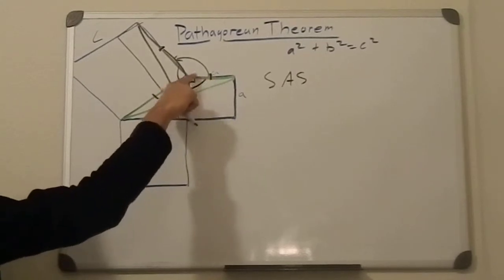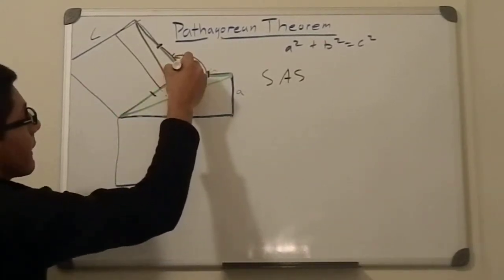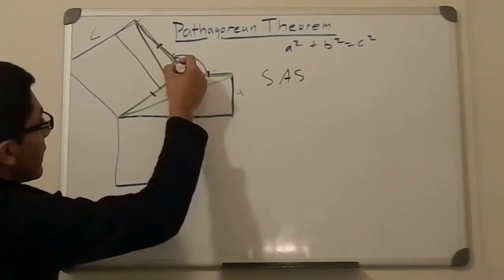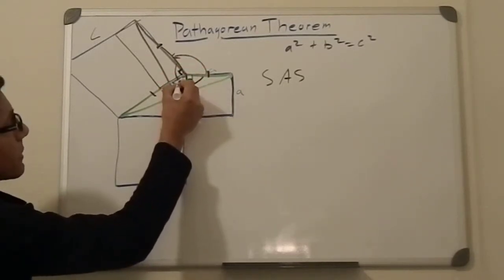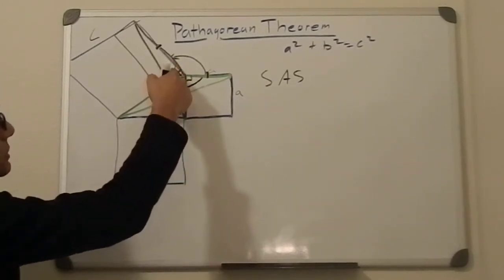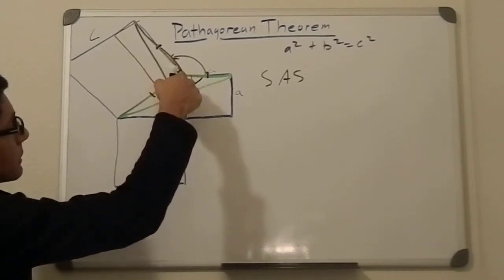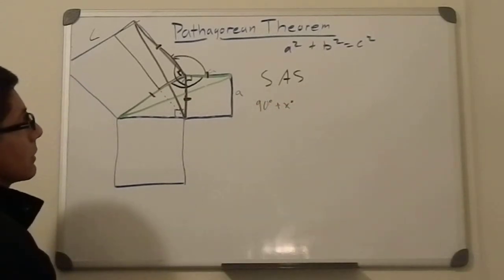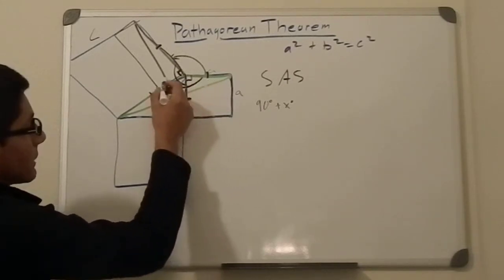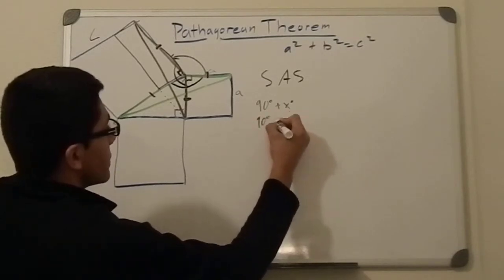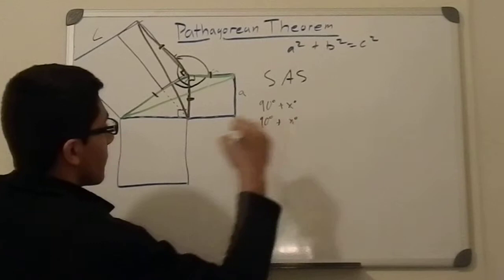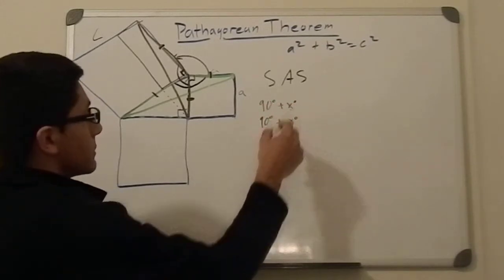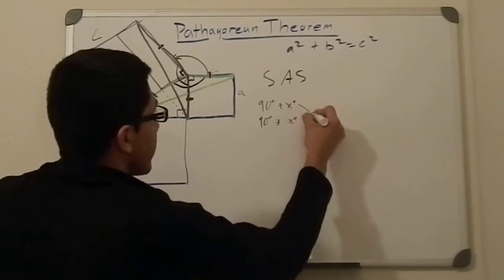This angle here for this square is 90 degrees because we drew it that way, and this angle here is 90 degrees for this square. Now, let's name this smaller angle x. The full included angle for triangle black is 90 degrees plus x, and the full included angle for triangle green is also 90 degrees plus x. We don't know x exactly, but because both angles equal 90 plus x where x is the same, we can conclude these two angles are equal.